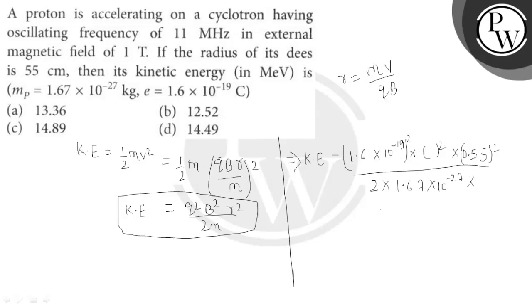We need to find this in mega electron volts, so we divide by 1.6 into 10 to the power minus 13 to convert directly to MeV. This gives us the answer: 14.49 mega electron volts is the kinetic energy. So the correct answer is option D. Thank you.